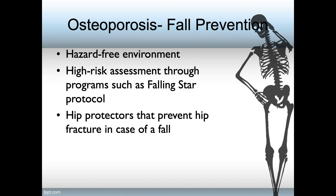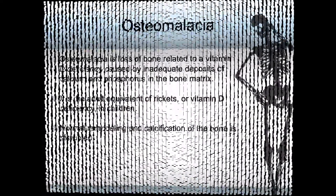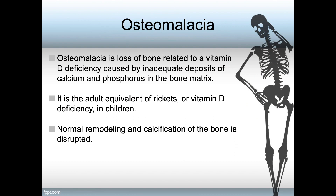The other major bone density problem is known as osteomalacia, and this is a nutritional intake problem. Osteomalacia is the loss of bone related to a vitamin D deficiency caused by inadequate deposits of calcium and phosphorus to the bone matrix. It is the adult equivalent of rickets, or vitamin D deficiency, in children, and normal remodeling and calcification of the bone is disrupted because of the malnutrition.